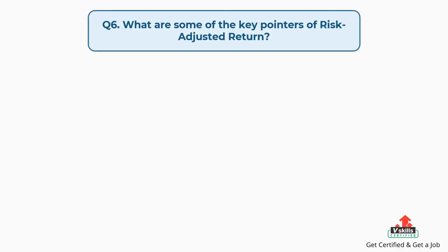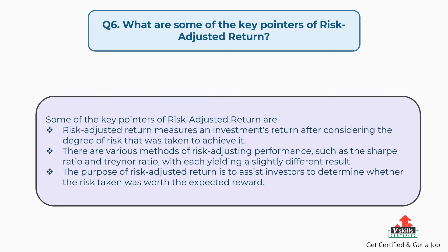Question number 6: What are some of the key pointers of risk-adjusted return? Firstly, a risk-adjusted return measures an investment's return after considering the degree of risk that was taken to achieve it. Secondly, there are various methods of risk-adjusting performance, such as the Sharpe Ratio and Treynor Ratio, with each yielding a slightly different result. Lastly, the purpose of risk-adjusted return is to assist investors in determining whether the risk taken was worth the expected reward.